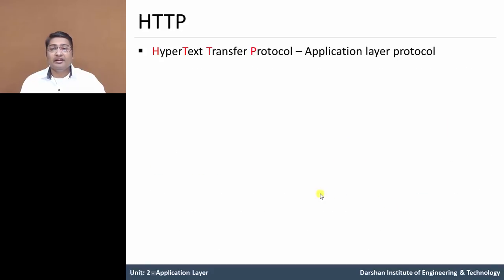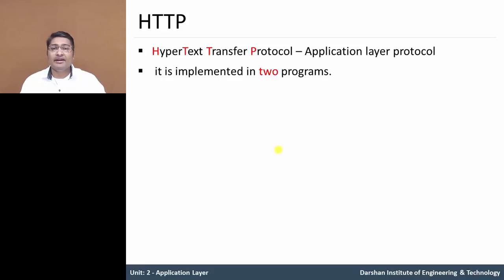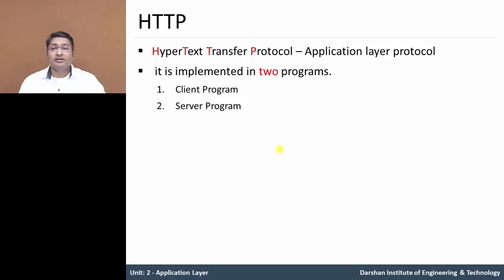Now let's look at HTTP protocol in detail. HTTP is an application layer protocol. It is implemented in two programs: the client program and the server program. In the client-server model, the client sends a request to the server for a particular object, and the server processes it and replies with a response containing that object.